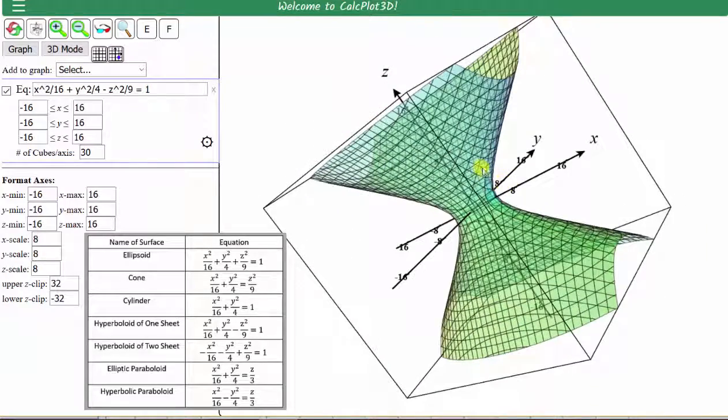Next is the hyperboloid of two sheets given by the equation negative x squared divided by 16 minus y squared divided by 4 plus z squared divided by 9 equals 1.